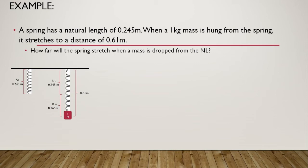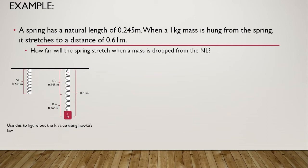At this point, the mass is just hanging there — it's in equilibrium, so it's not moving and the forces are balanced. We want to figure out: what if we put the mass right at the natural length and just drop it? How far is it going to stretch? In order to do this, we need to figure out the K value using Hooke's Law. Since the hanging spring is at equilibrium, the net force equals mass times acceleration, which equals zero newtons.